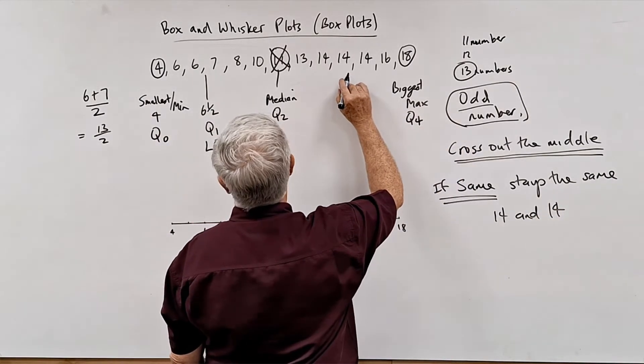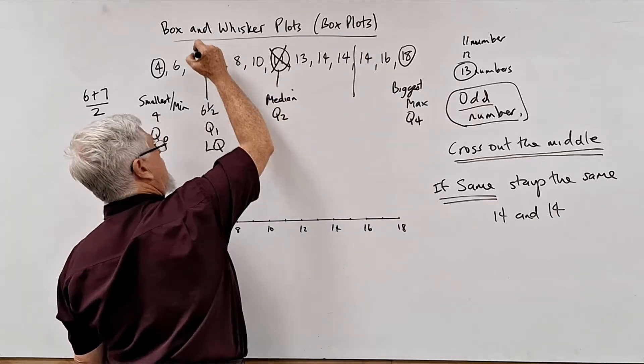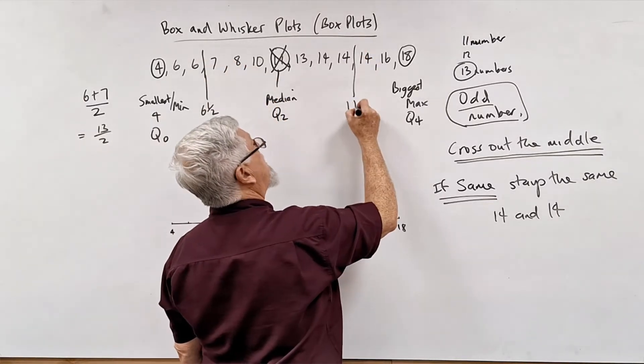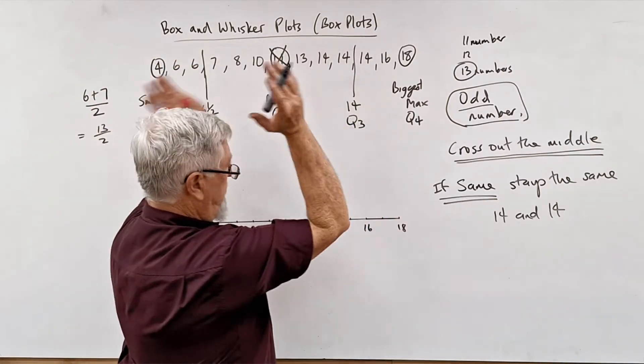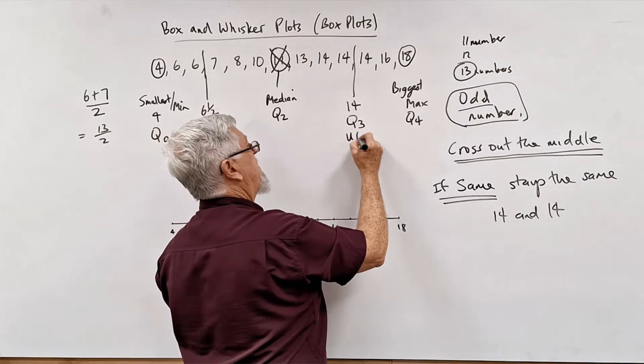So here's the middle here. I'm going to go down there. By the way, I'm not going to put that line all the way through. So there's 14. That's called Q3, the third quarter, first quarter, second, third quarter, and it's called the upper quartile.